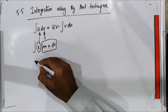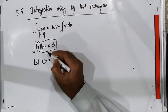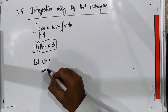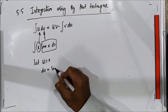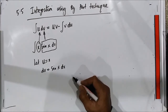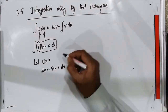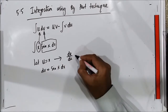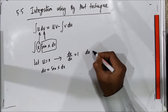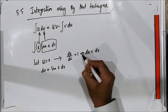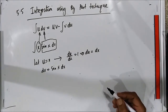So let u equal x, and dv equal sin(x) dx. If u equals x, then du/dx equals 1, so du equals dx. Now for dv equal to sin(x) dx, I need to find V by integrating sin(x) dx.